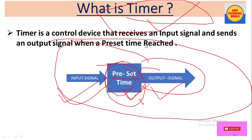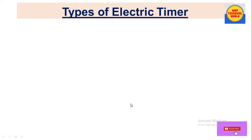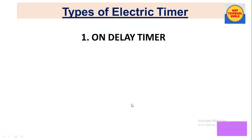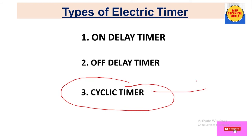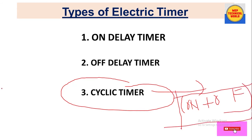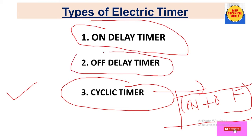Now let's discuss the types of timers. There are three types: the first is on delay timer, the second is off delay timer, and the third is cyclic timer. The cyclic timer is a combination of both on delay and off delay timer. In this video we'll discuss on delay and off delay timers, and in the next video we'll discuss the cyclic timer.